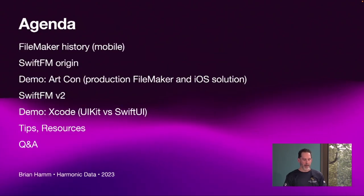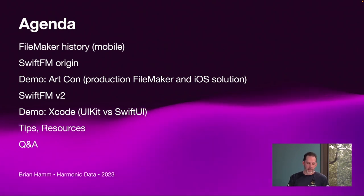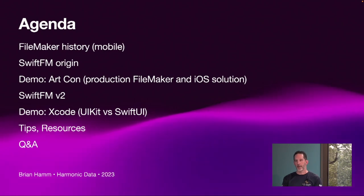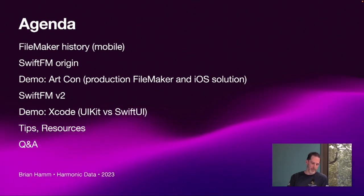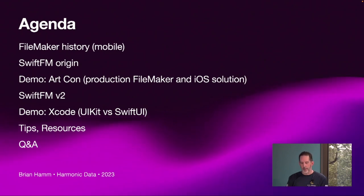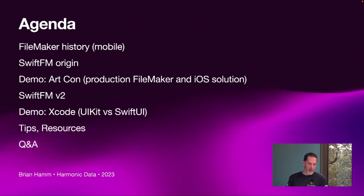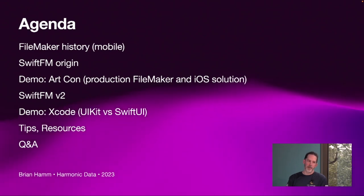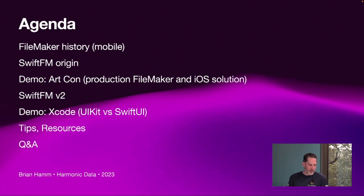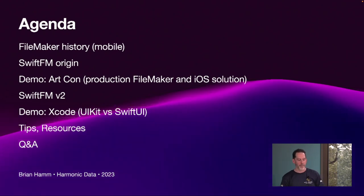So what are we going to talk about today, exactly? In order to talk about Swift FM, we need to talk a little bit about the FileMaker history in the mobile space — there are three or four events on that timeline that will make more sense as to how I arrived at creating Swift FM. I'm going to show you a real-world production public FileMaker database for the Art Conspiracy organization and the companion iOS app I wrote in Swift. I'll show you some Swift code and differences between UIKit and SwiftUI, which are the two primary ways of building an iOS app. I will cover some gotchas, talk about some third-party apps, and other resources I found super helpful.